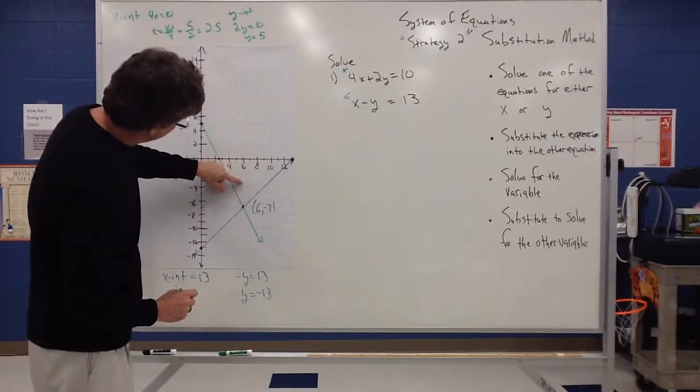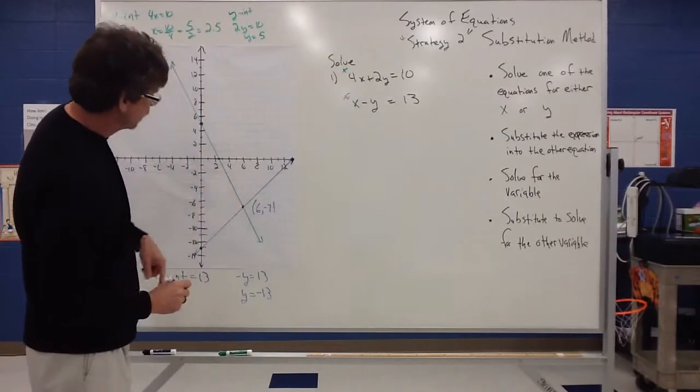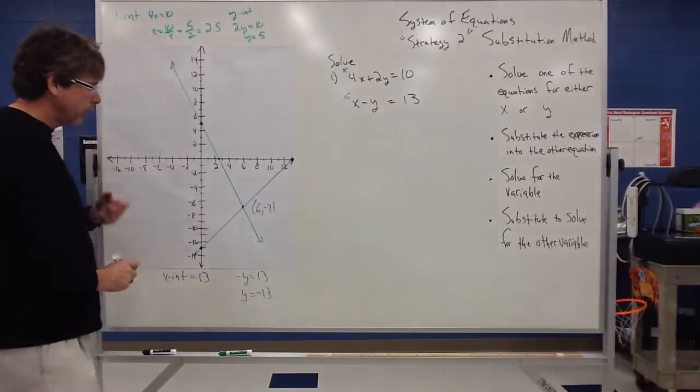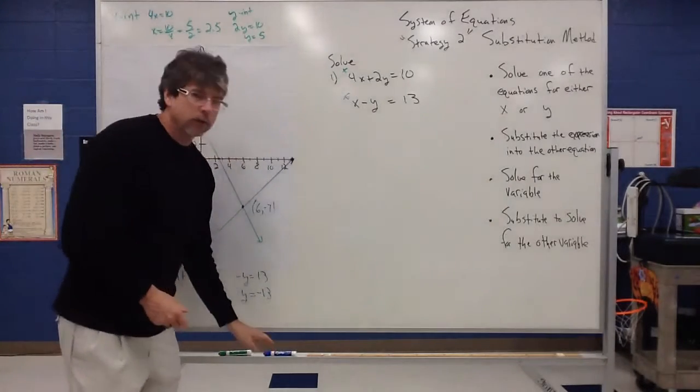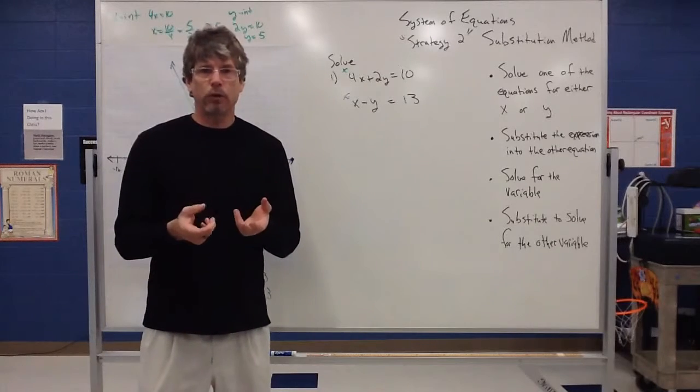So a 6 negative 7. So write 6 in 1, 2, 3, 4, 5, 6, 7. So that would be the ordered pair they have in common. So that's how I could do it from a strategy 1, which was graphing.